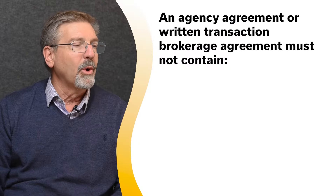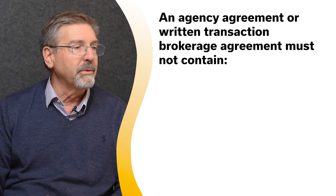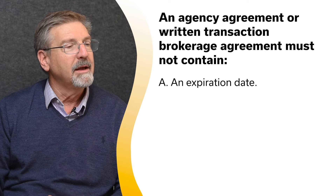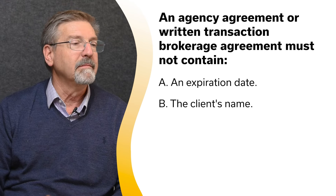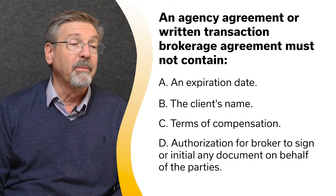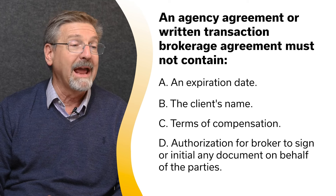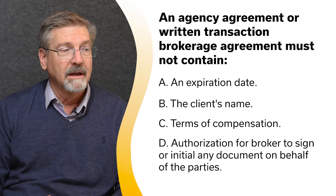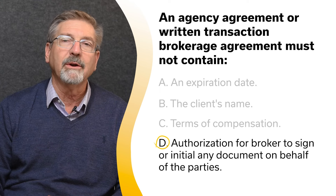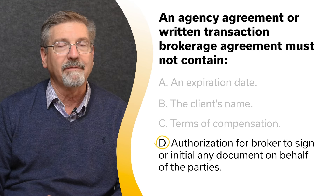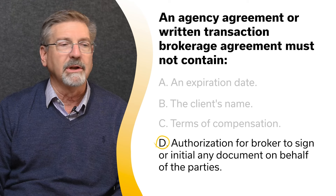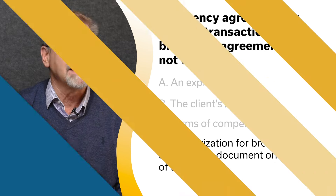An agency agreement or written transaction brokerage agreement must not contain: A. An expiration date. B. The client's name. C. Terms of compensation. Or D. Authorization for the broker to sign or initial any document on behalf of the parties. No agreement may authorize a broker to sign or initial a document on behalf of the parties to a transaction.